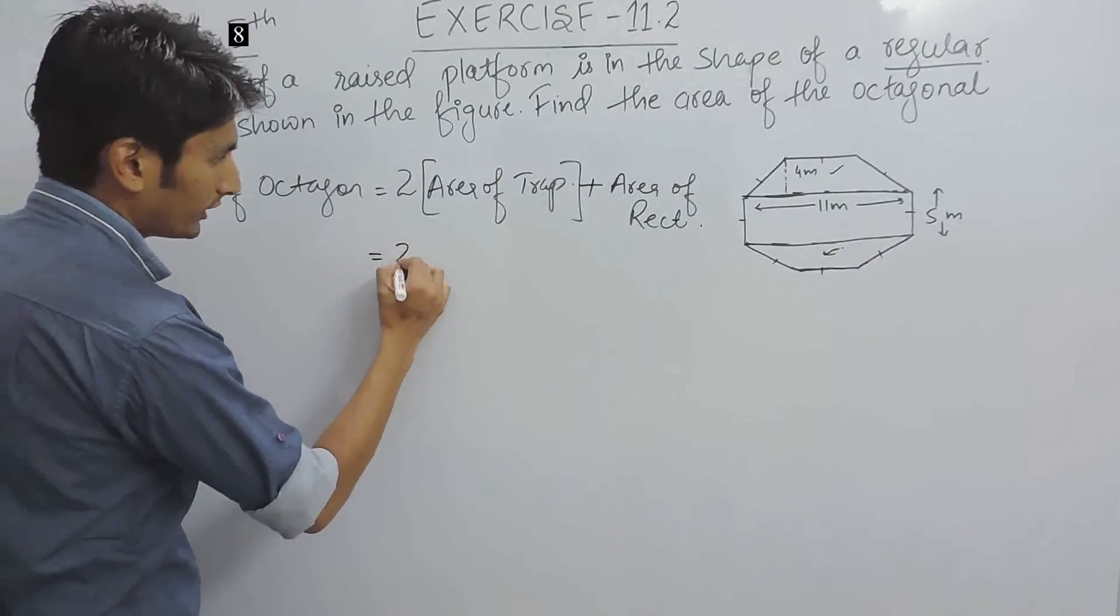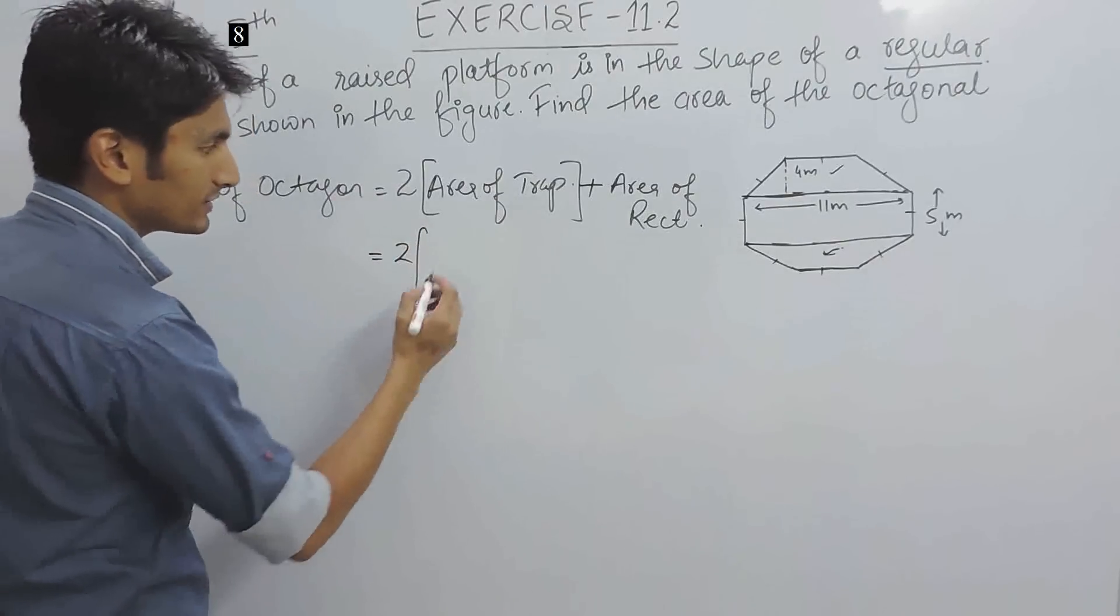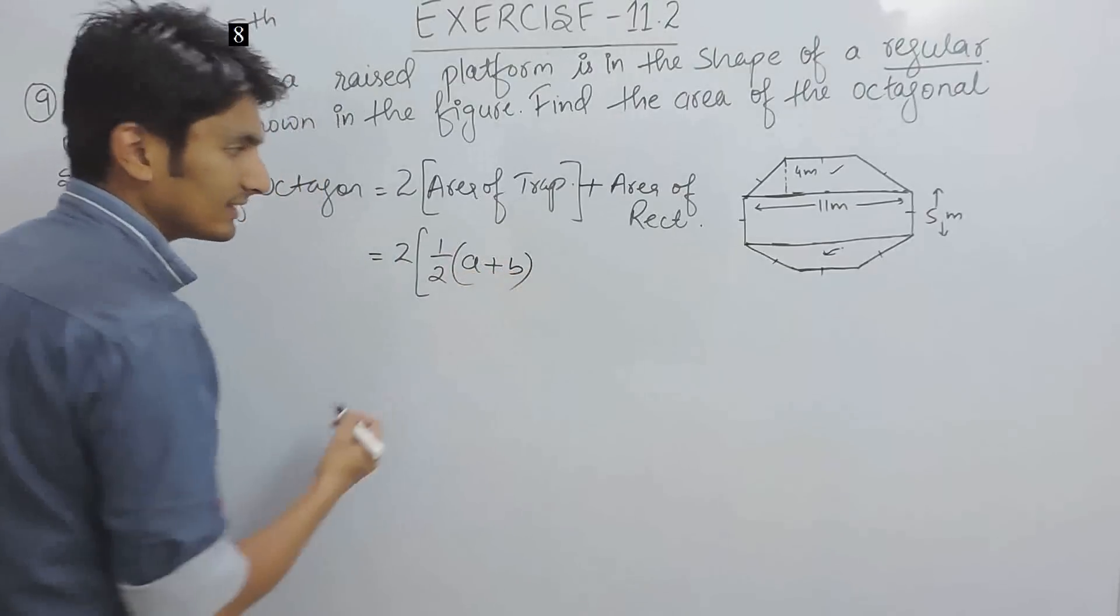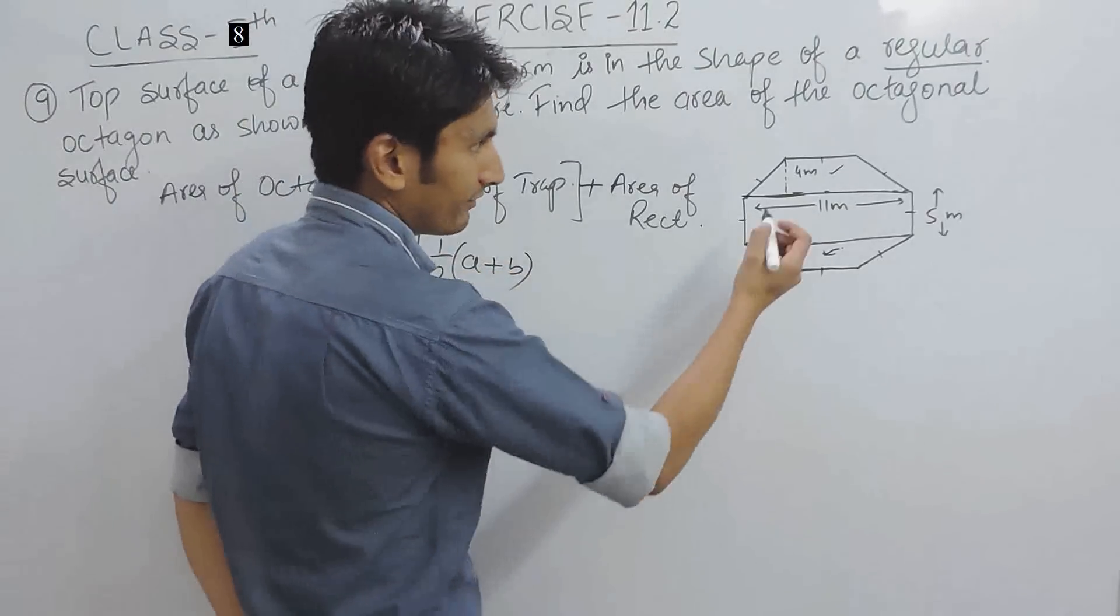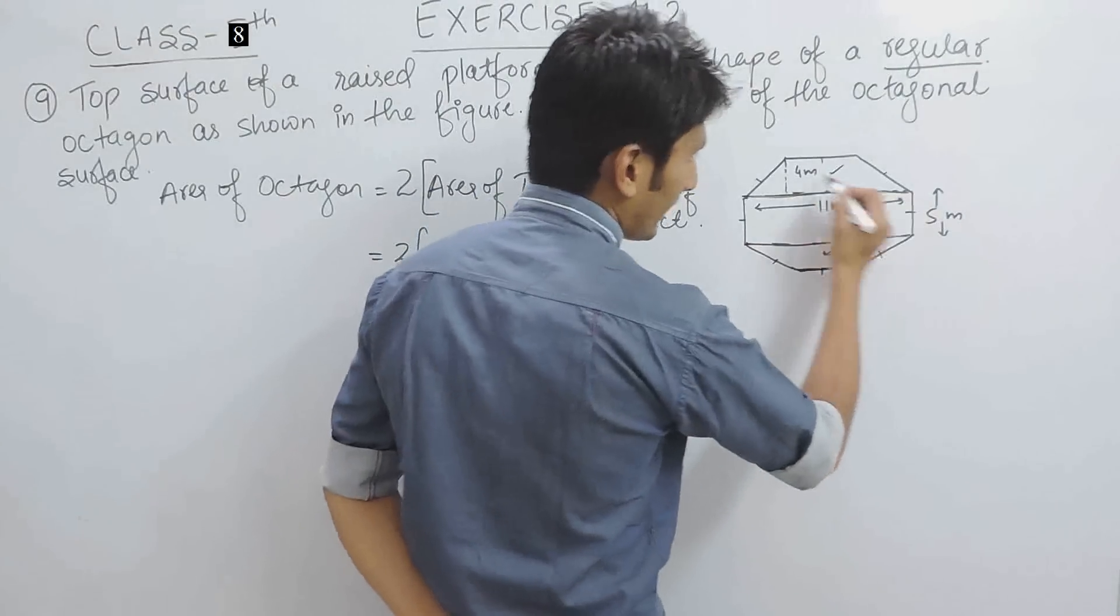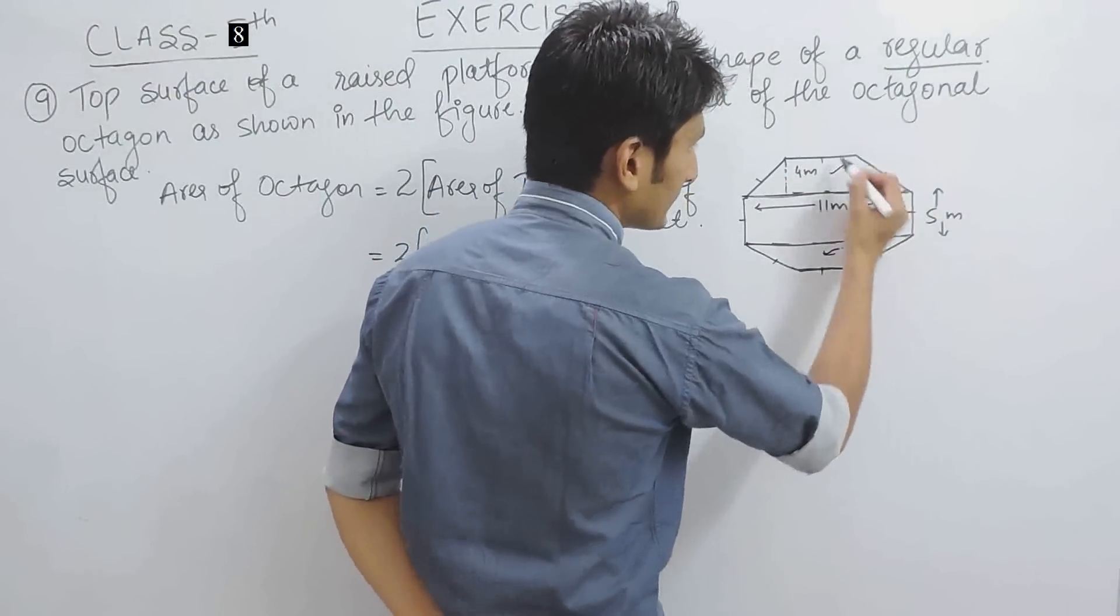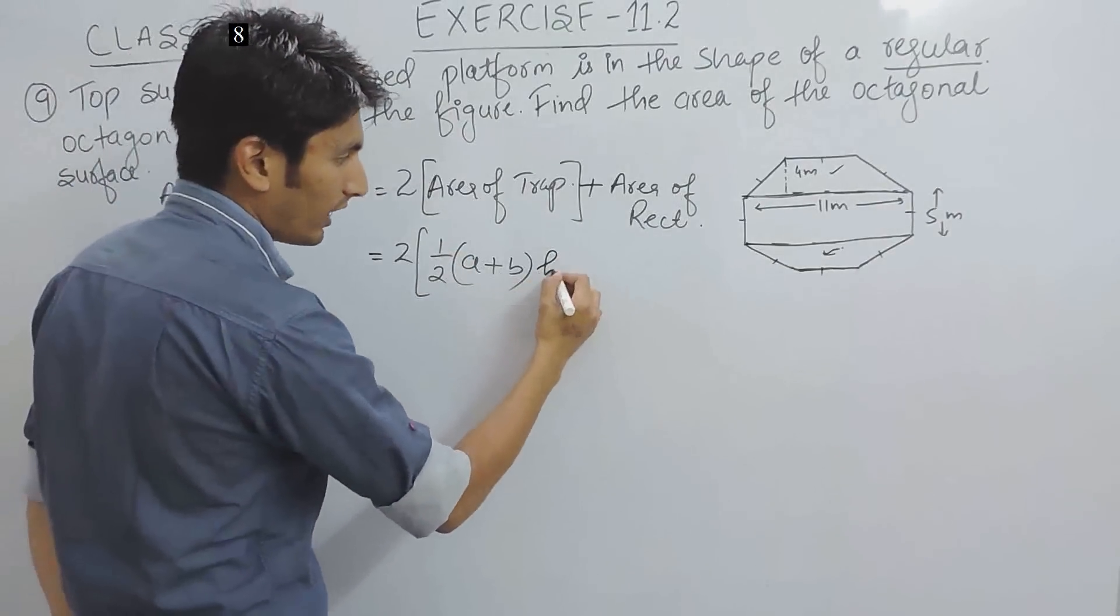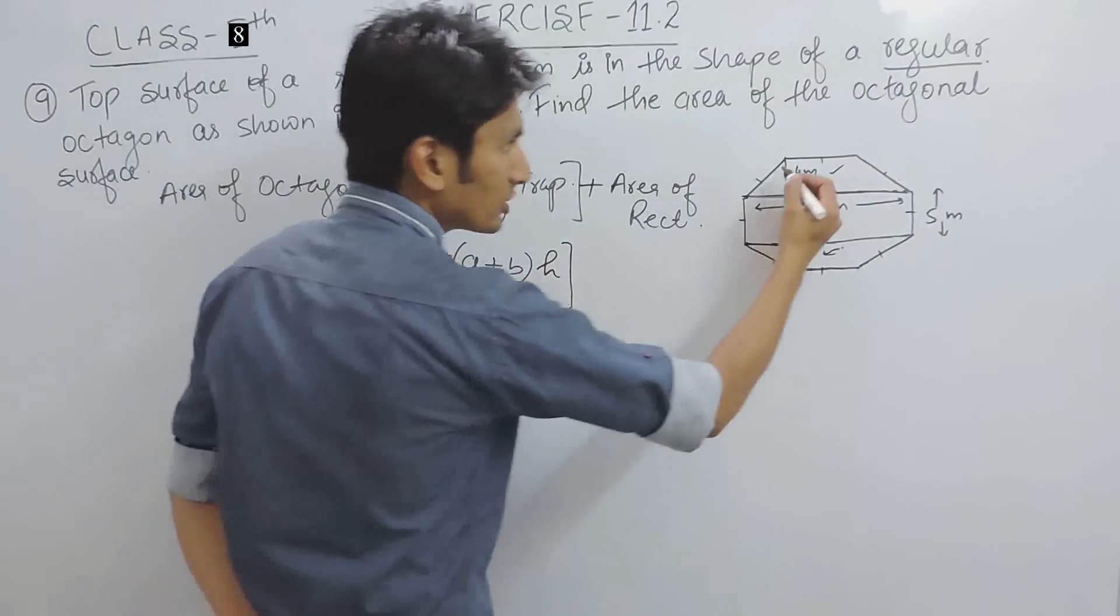Now, we know that area of the trapezium is basically half sum of parallel sides. Suppose, if these and this are parallel sides, so area is half sum of parallel sides into height, which is this height.